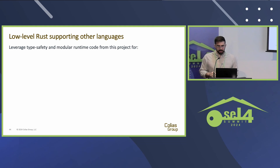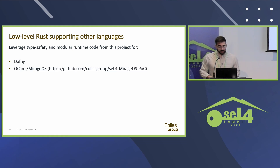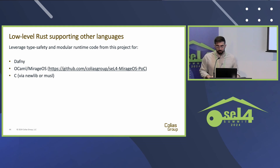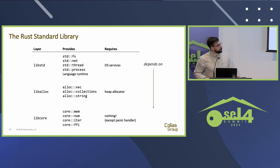Rust is low-level enough to support other language runtimes. I mentioned Dafny. I've also experimented with using Rust to support an OCaml runtime for running MirageOS unikernels in seL4 userspace. We can also use Rust behind a libc like musl or musl to support C. You can also use lower-level Rust to support non-hosted Rust code — that is, Rust applications that use libstd.